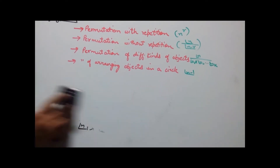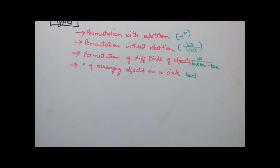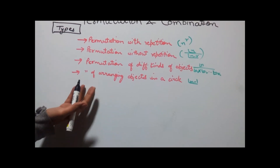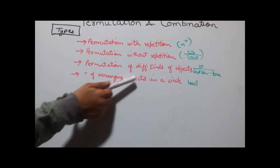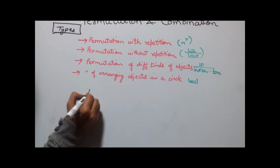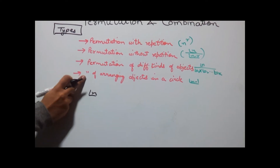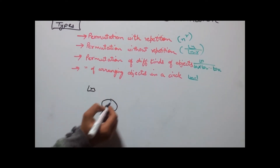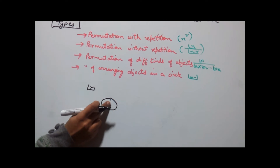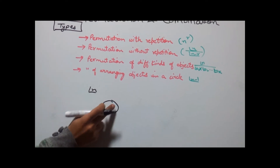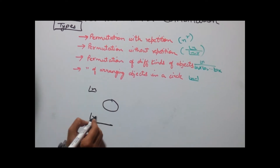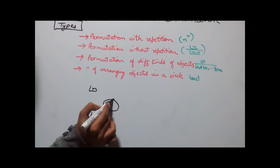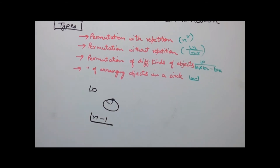As we know, the permutation of objects arranged in a row is factorial n. When arranging objects in a circle, the permutation becomes factorial (n minus 1), because the last point connects back to form the circle.